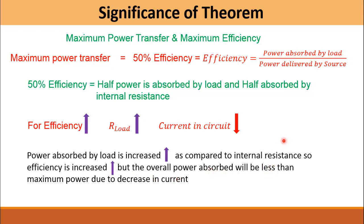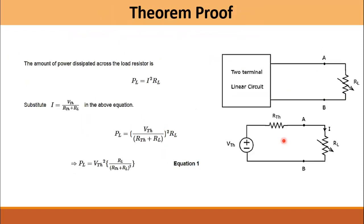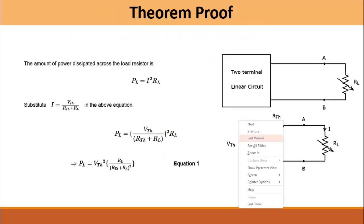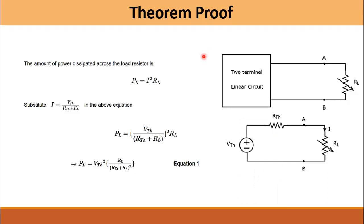Now that we understand the concept of the maximum power transfer theorem, it's time to prove this theorem. We will take a circuit in which this box represents the two-terminal linear circuit, which includes a voltage source and the terminal resistance.